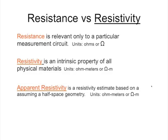In this second lecture on resistivity measurements, we're going to talk about how to actually measure resistivity in the ground, and we'll continue with that into a third lecture. First, we need to recall the definition of resistance versus resistivity. The units of resistance are ohms, and it's only relevant to a particular circuit or device. Resistivity is an intrinsic property of all physical materials, like density — you don't need a particular circuit.